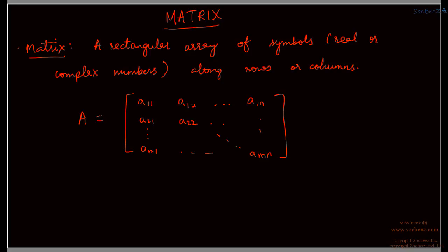The first subscript stands for the row. We see that here one is common, so this is the first row, then the second. Finally, we see that there are totally M rows, and similarly there are N columns. So that is the second index, and this is what is known as the order of the matrix — order is given by M cross N.